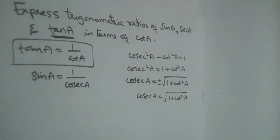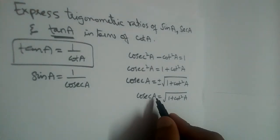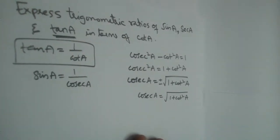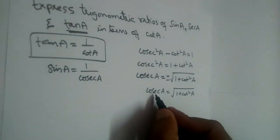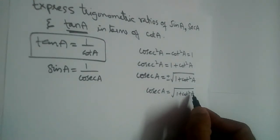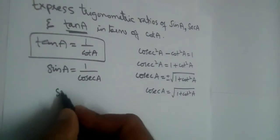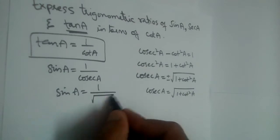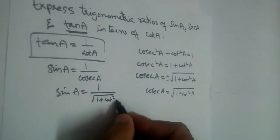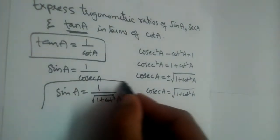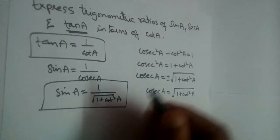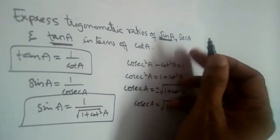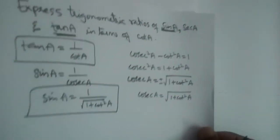So cosecant will be positive. The value of cosecant is root 1 plus cot square A. If we substitute it here, sin A equals 1 by cosecant, which is 1 by root 1 plus cot square A. So we got sin also. Sin is done. Let us find the value of secant in terms of cot.